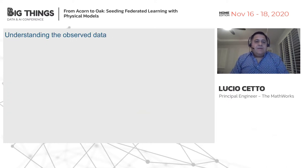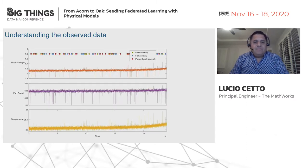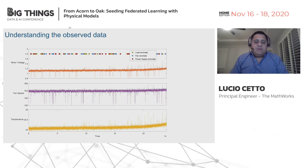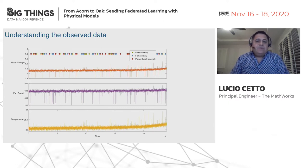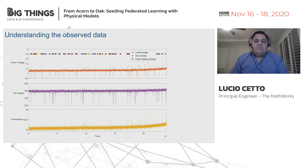Let's start by understanding the data that we can observe. We observe three different variables from sensors in each system, or fans. We observe the voltage applied to the motor, the angular speed of the fan, and the temperature. For visualization purposes in these examples, we have introduced more anomalies than we usually expect.